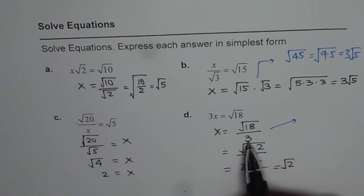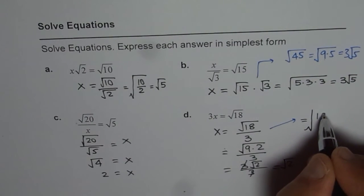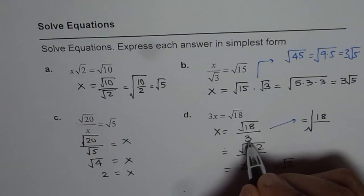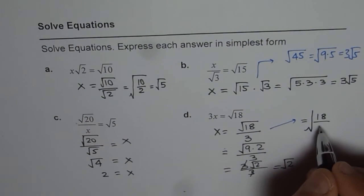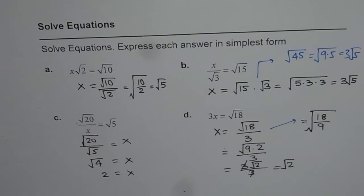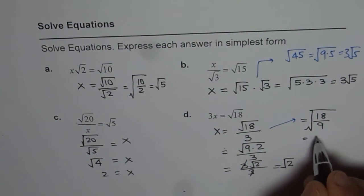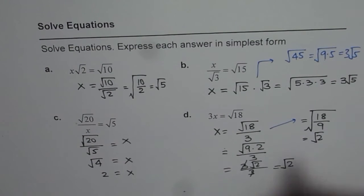The other way is, we can take 3 within square root. That is to say, we could write this as √18 divided by, when you take 3 inside the square root, it becomes 9. 3 square is 9. So, when you take it in, it becomes 9. And we could write this as √2. So, that is an alternate way of doing it.